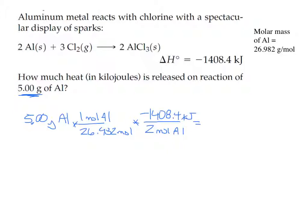You're used to molar masses where it's always one mole, but when we're doing enthalpy we need to look at what the balanced reaction says. The balanced reaction does not say negative 1408 for one mole of aluminum — it says negative 1408 for two moles of aluminum. So you have to check the balanced reaction. Any questions about why I'm using two moles of aluminum?